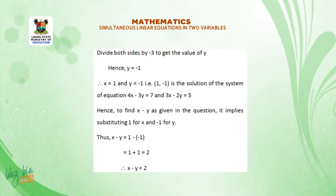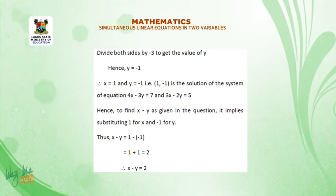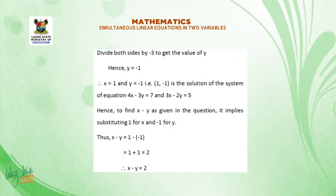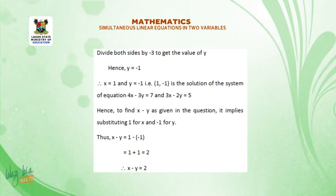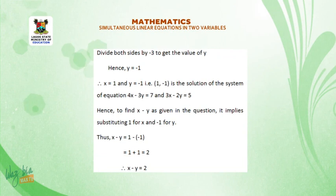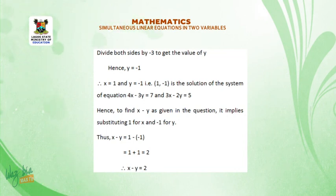Therefore, x is equal to 1 and y is equal to minus 1. That is, (1, −1) is the solution of the system of equations 4x minus 3y is equal to 7 and 3x minus 2y is equal to 5. Hence, to find x minus y as given in the question, it implies substituting 1 for x and minus 1 for y. Thus, x minus y is equal to 1 minus (−1), which is equal to 1 plus 1, which is equal to 2. Therefore, x minus y is equal to 2.